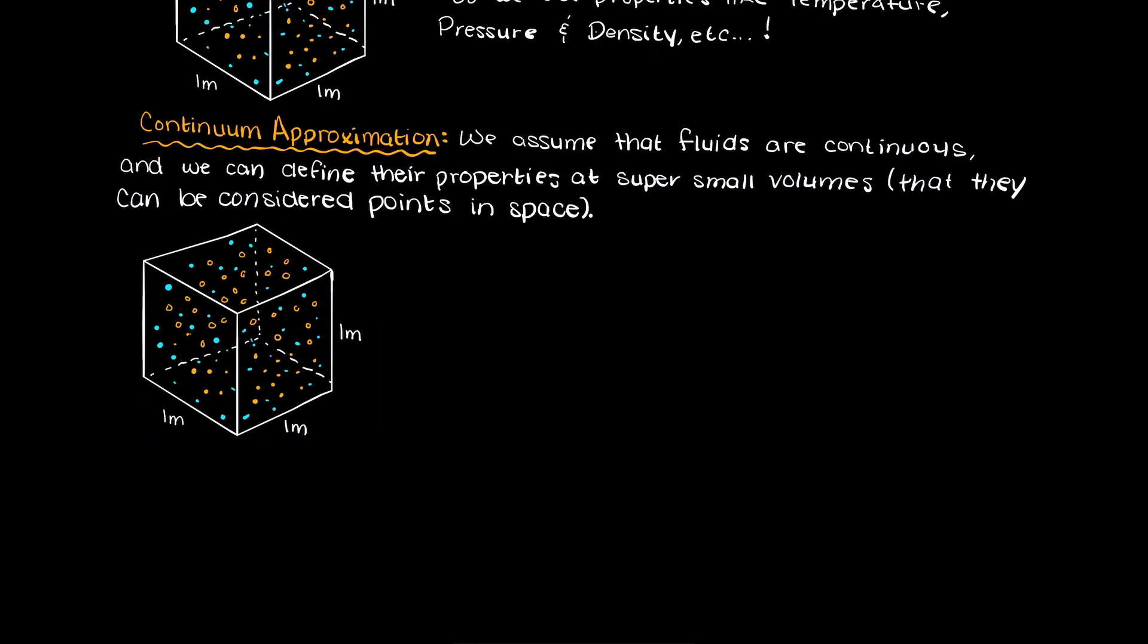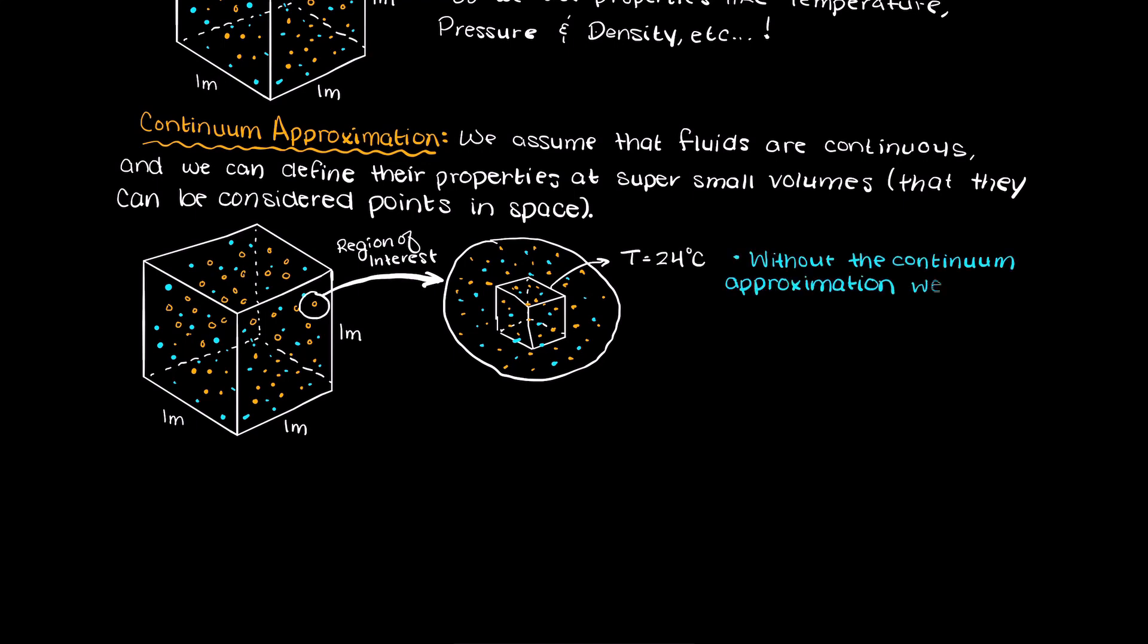Looking at our box example again, let's assume it's at steady state and the temperature at this point is 24 degrees Celsius. If we didn't use the continuum approximation, we would need to track every molecule that enters and leaves our control volume.